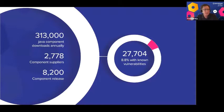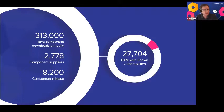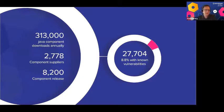Not all open source components are created equal — some have vulnerabilities or issues. In the Java world, that number hovers around 10%, sometimes a little below at 9%, sometimes a little higher at 11–12%. However, JavaScript may be quite a bit higher; research has shown that as many as 50% of JavaScript components out there have some type of vulnerability.